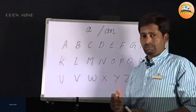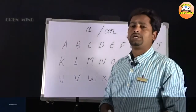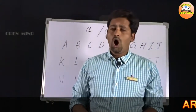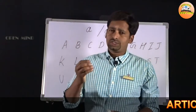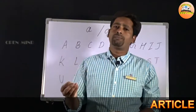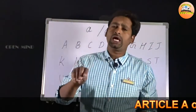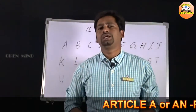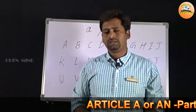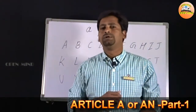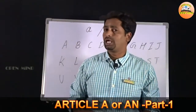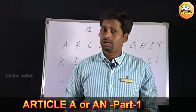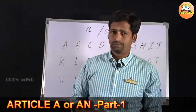जब हम किसी चीज़ के बारे में बात कर रहे हैं और किसी चीज़ के ऊपर अपनी प्रत्येक दृष्टि नहीं है, तब हम A या AN का प्रयोग करते हैं।